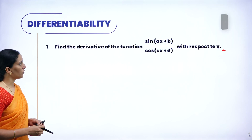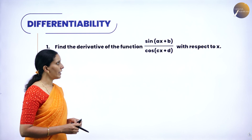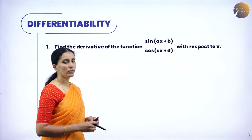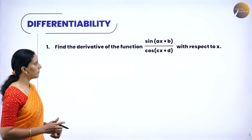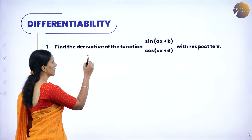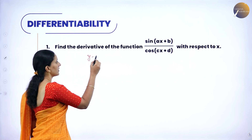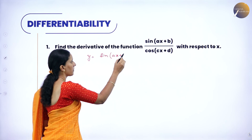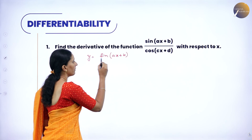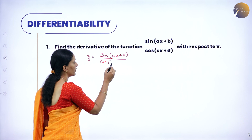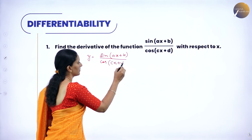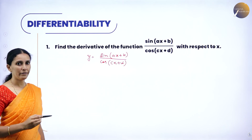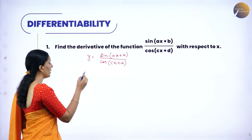Find the derivative of the function: sine of (ax plus b) divided by cos of (cx plus d) with respect to x. So let me take y equal to sine of (ax plus b) divided by cos of (cx plus d). So the function is in the form of u by v, so let us apply the quotient rule here.